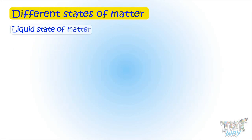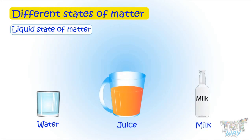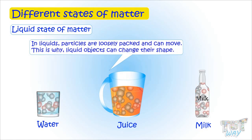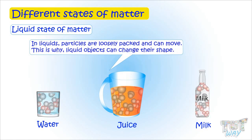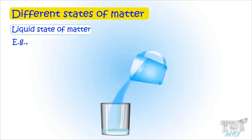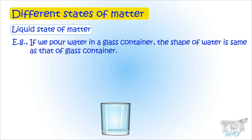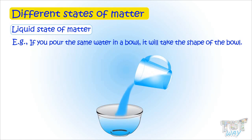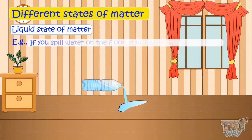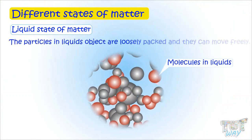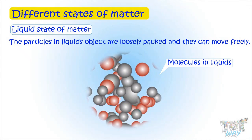Next, we have liquids. Liquid objects like water, juice, and milk — in any liquid, particles are loosely packed and can move. This is why liquid objects can change their shape. For example, water takes the shape of the container we pour it into. If we pour water in a glass, the shape of water is the same as that of the glass. If you pour the same water in a bowl, it will take the shape of a bowl. And if you spill water on the floor, it will again change its shape. This is because the particles in a liquid are loosely packed and they can move freely.